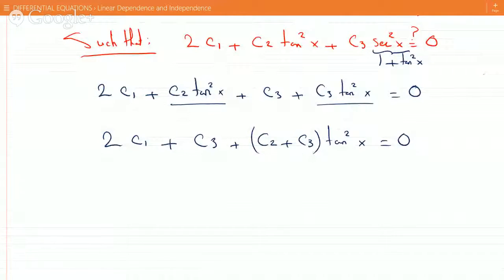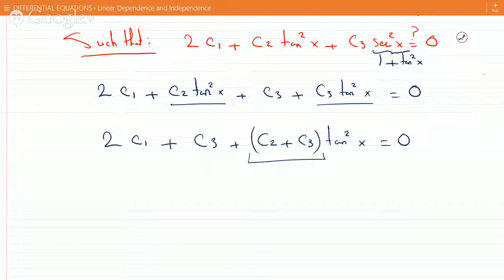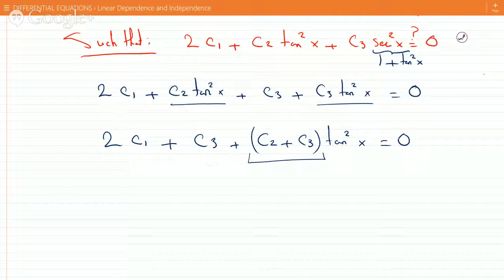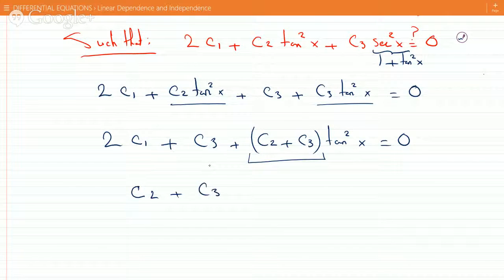Now watch. If you let this zero, so if you let C2 plus C3 equals zero, which means this one goes away and you get C2 equal minus C3.